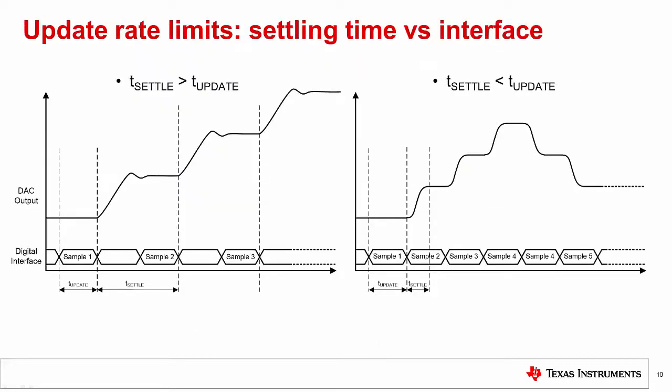Here we have two figures showing two types of update rate limits. On the left, we have an example of a DAC where the settling time is greater than the digital interface update time. But you can see that we have enough time during the settling period to write the next code to the device. In this case, the DAC sample rate is determined by the settling time.